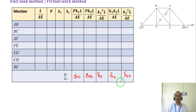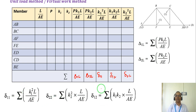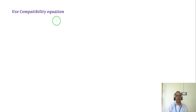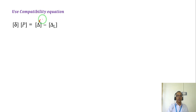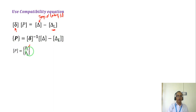This is the virtual work method. Using the compatibility equations: delta times P equals delta minus delta L. Here delta L is the displacement due to lack of fit, and delta is the flexibility matrix. Taking the inverse of delta, we can find P. So P equals delta inverse times (delta minus delta L), giving us P1 and P2 — the two unknown forces in those members.